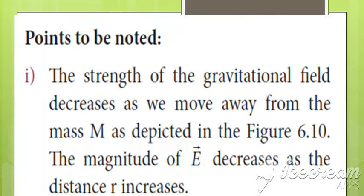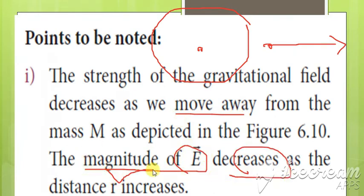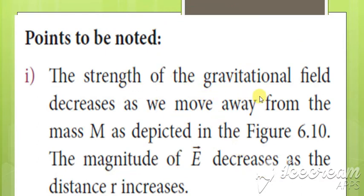Points to note. First point: the strength of the gravitational field decreases as we move away from the mass. When a particle moves away, the strength of the gravitational field decreases. So the magnitude of E decreases as the distance increases.